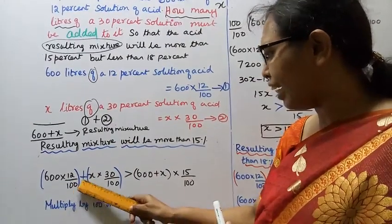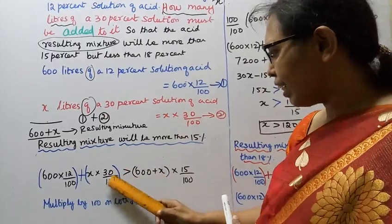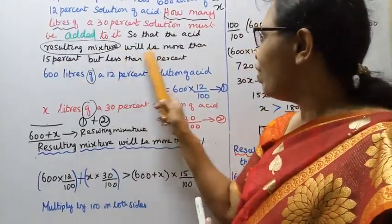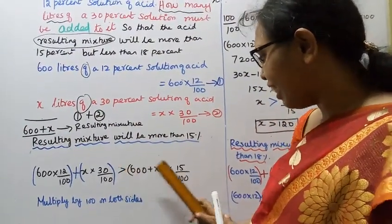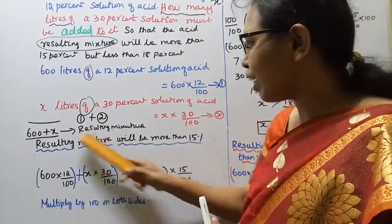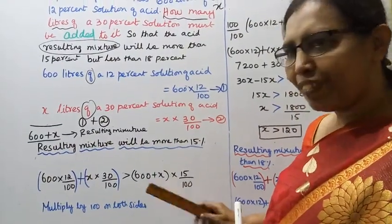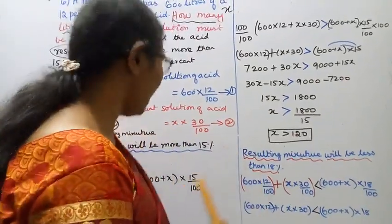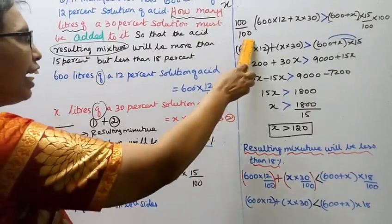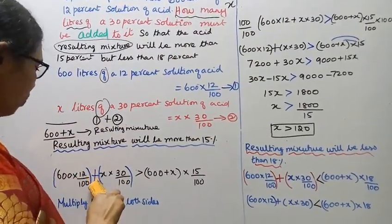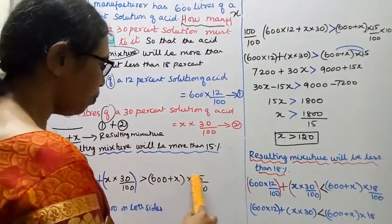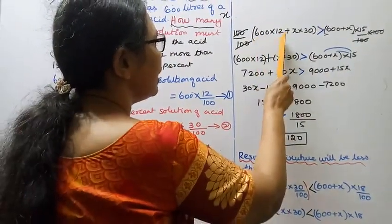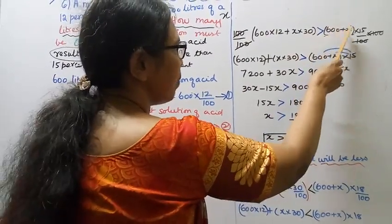Setting up the first inequality: 600 into 12 by 100 plus X into 30 by 100 is greater than 15 by 100 into the resulting mixture (600 plus X). Multiply both sides by 100.